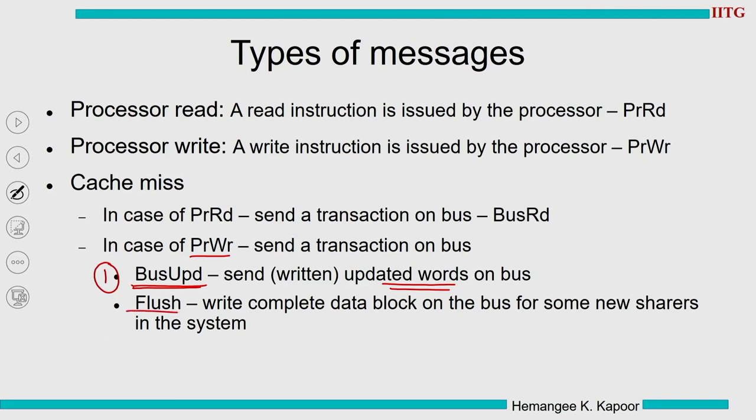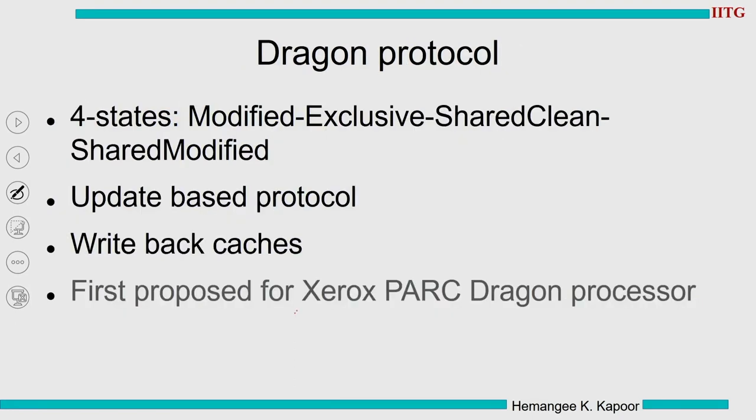There is also the flush transaction: if the data block gets evicted and the write is complete, you have to send the data item to main memory if the memory does not update itself every time on a bus update. Or if there is a new sharer in the system and we have the up-to-date data copy, we also have to send the data block.